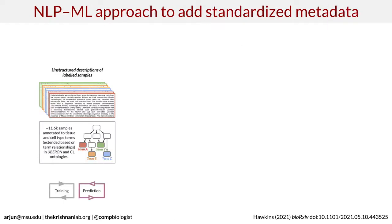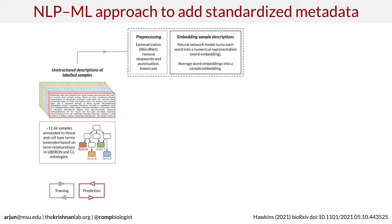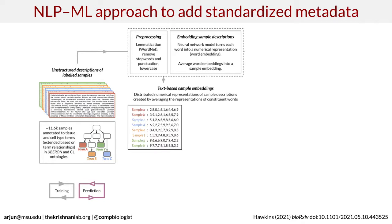The way we use this idea for sample annotation is as follows. First, we created a large gold standard where we manually examined sample descriptions and associated them with tissue and cell type terms in the Uberon and Cell Ontology. The ontology is great because it uniquely defines tissues and cell types and tells you how these terms relate to each other based on anatomy, physiology, and development. Using this ontology backbone and the sample descriptions, we performed natural language processing in two steps: first a pre-processing step to clean up the text, and then we created what we call a text-based sample embedding — taking every word in the sample's description, creating a word embedding, and averaging all embeddings into a single representation for that sample.